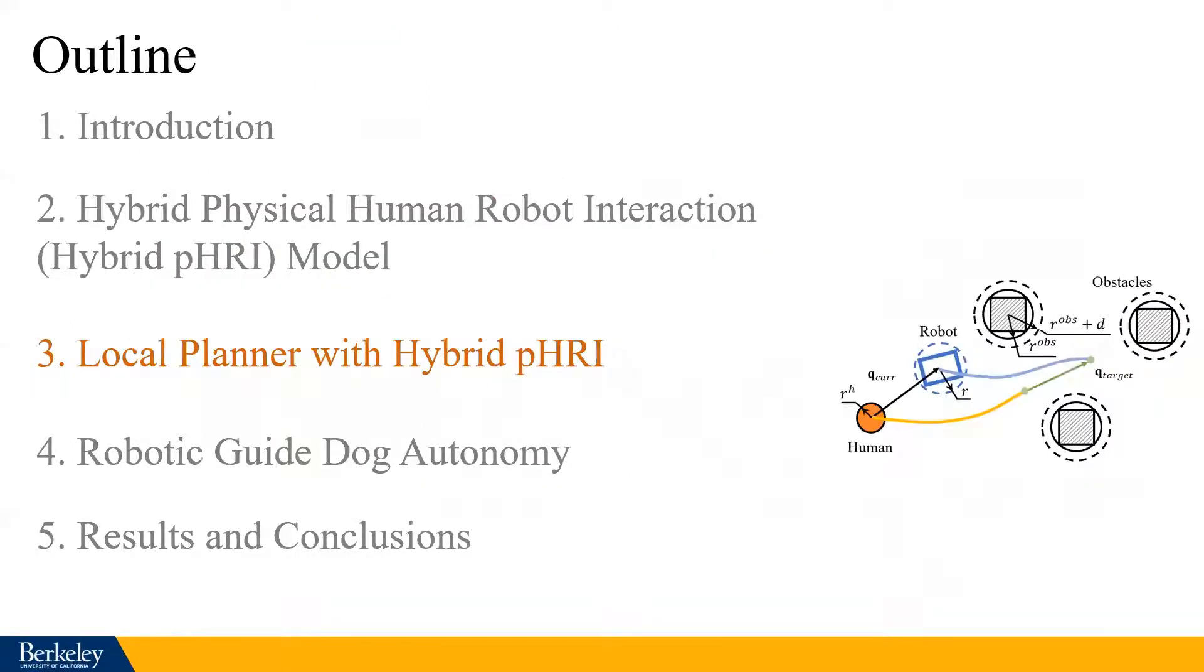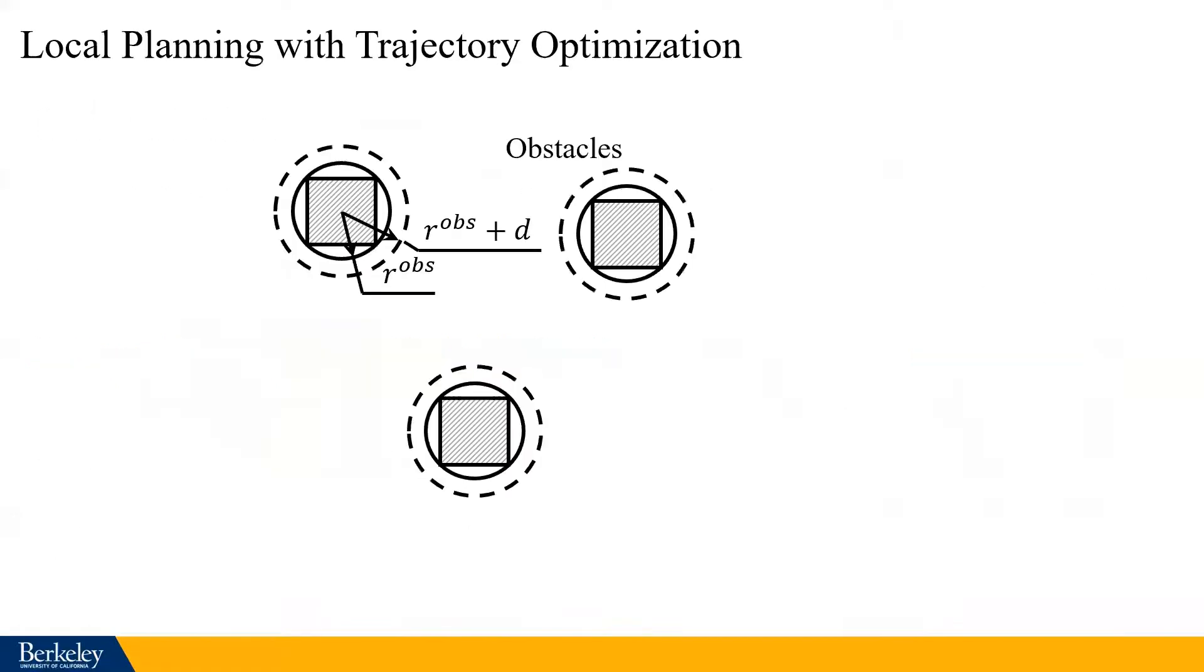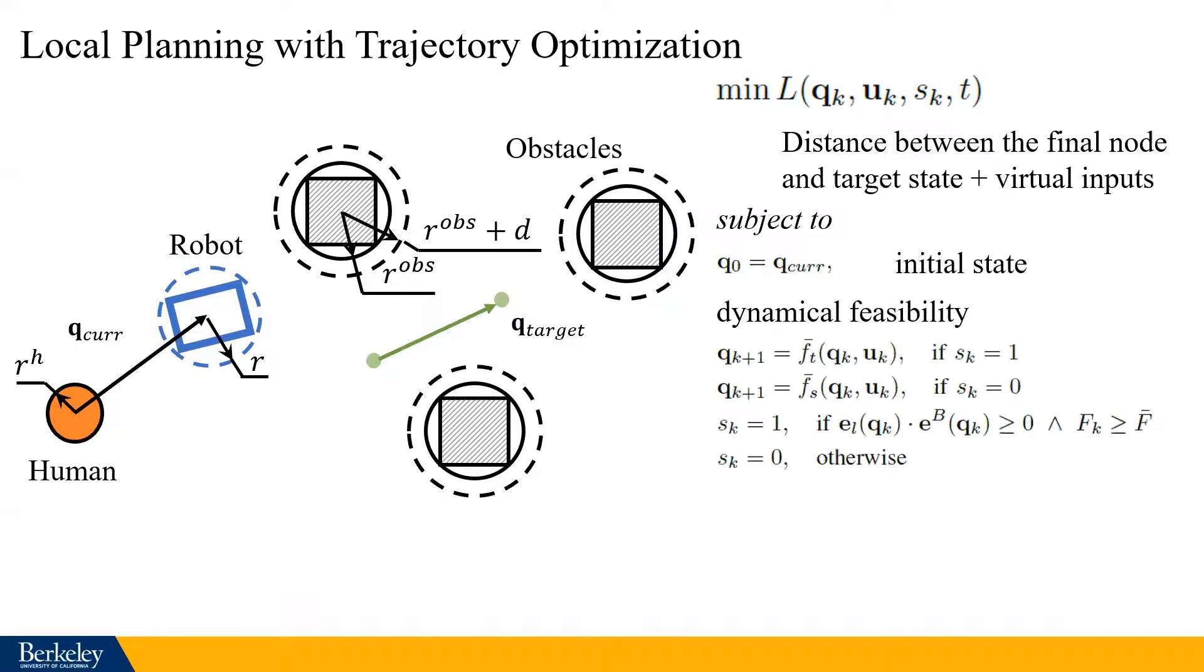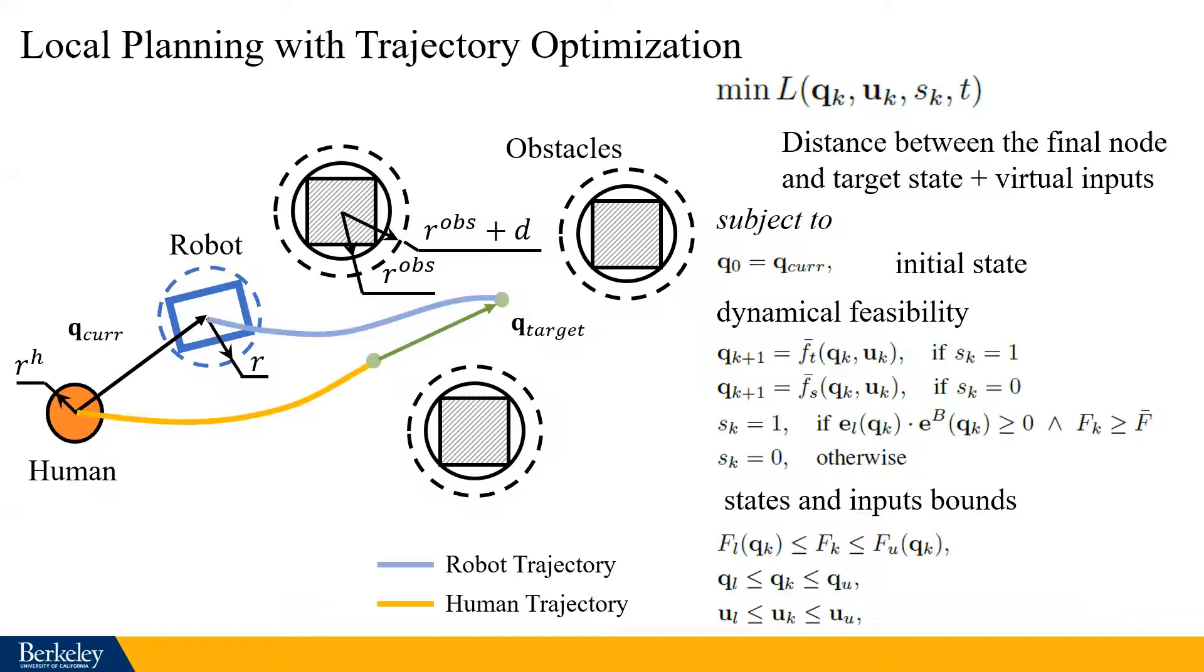Once we obtain such hybrid physical HRI model, we can utilize this in an optimization-based local planner to enable the robot to lead the human to reach the given waypoints while avoiding obstacles. This is the system at the current state. The robot and the human have their own dimensions. We want to move the system to the target state. Therefore, we formulate a collocation-based mixed-integer optimization problem where we want to minimize the distance between the final node to the target node while having small virtual inputs. We subject it to the initial state conditions, and we enforce the hybrid dynamics we just developed via collocations. We also enforce the states and input bounds. By solving these problems, we can have the trajectories for both robot and human to approach to the given waypoints.